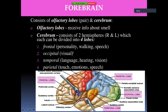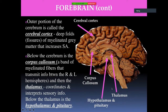Different lobes of the cerebrum have different functions. The frontal lobe controls personality, walking, and speech. The occipital lobe, at the back of the brain, processes visual information — a sharp blow there can cause blindness. The temporal lobe handles language, hearing, and vision. The parietal lobe is responsible for touch, emotions, and feelings.